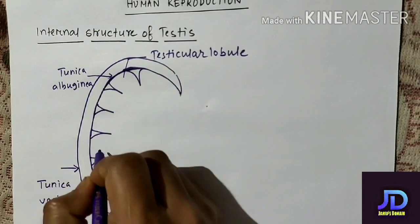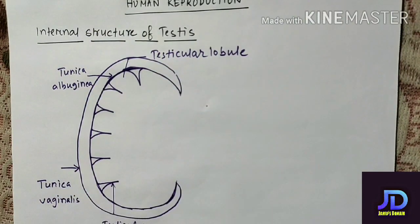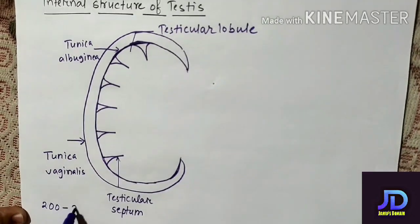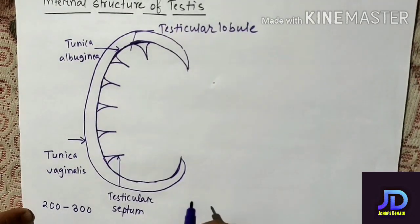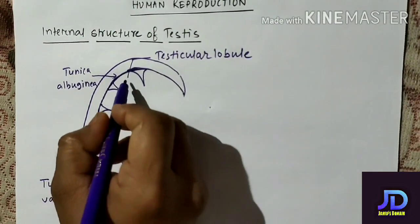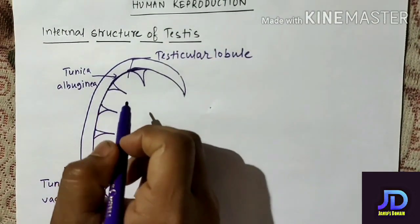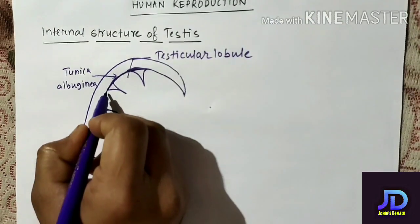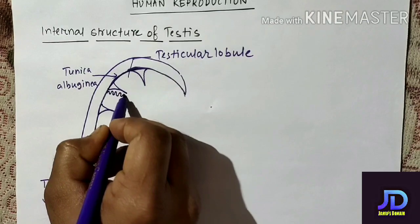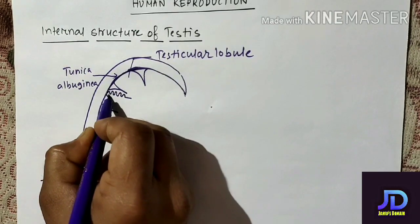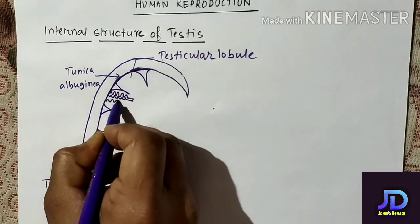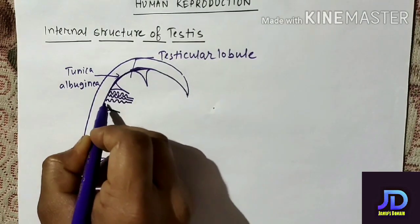Now in a testes there are approximately 200 to 300 testicular compartments. That means in a testes about 200 to 300 testicular lobules are there. Now in each testicular lobule or compartment there are some coiled tube-like structures.